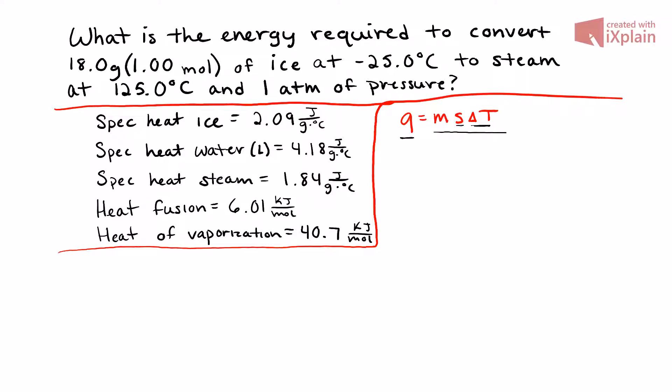We also need to take into consideration that we are going from ice to water to steam — all three have different specific heats. From negative 25°C to 0°C we'll use 2.09 as our specific heat, then incorporate the heat of fusion to melt the ice. From 0°C to 100°C we use 4.18, then use the heat of vaporization (40.7) to convert water to steam, and finally the specific heat of steam for the last 25°C. We'll add all those energies together at the end.